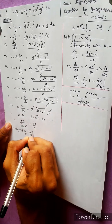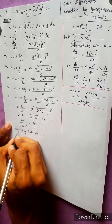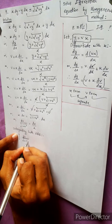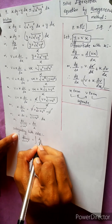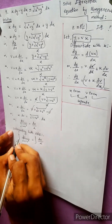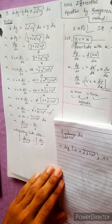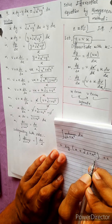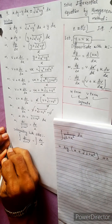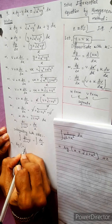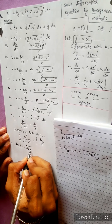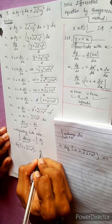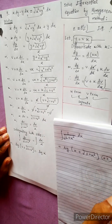Integrating both sides, we get: integration of dv divided by under root 1 plus v squared equals to integration of dx divided by x. Using the formula for under root 1 plus v squared: log(v plus under root 1 plus v squared) equals to log x plus c, where c is the integration constant.